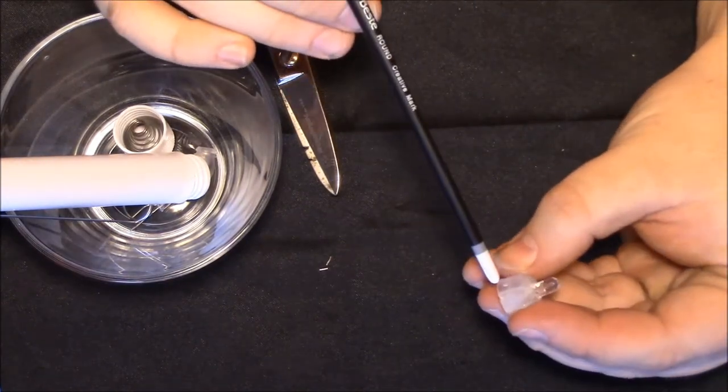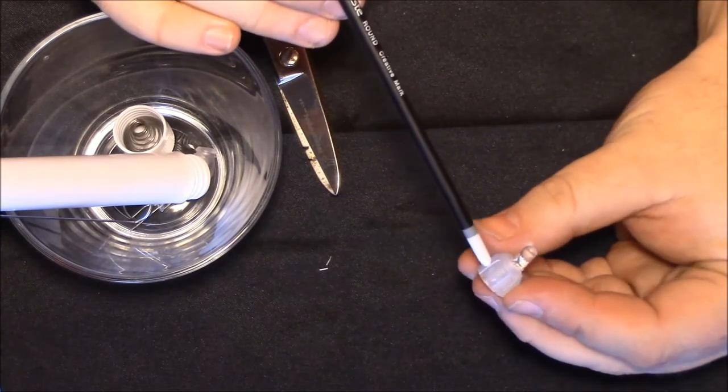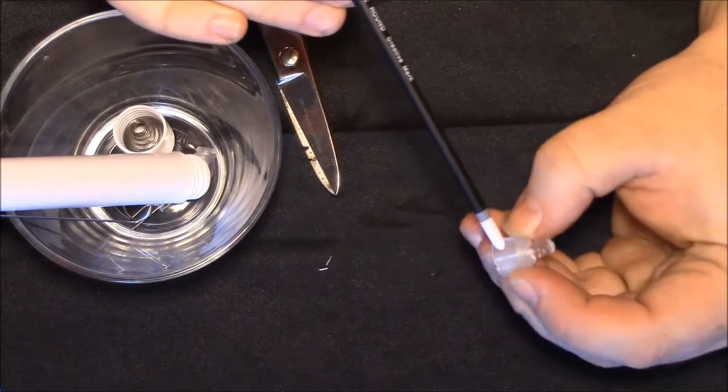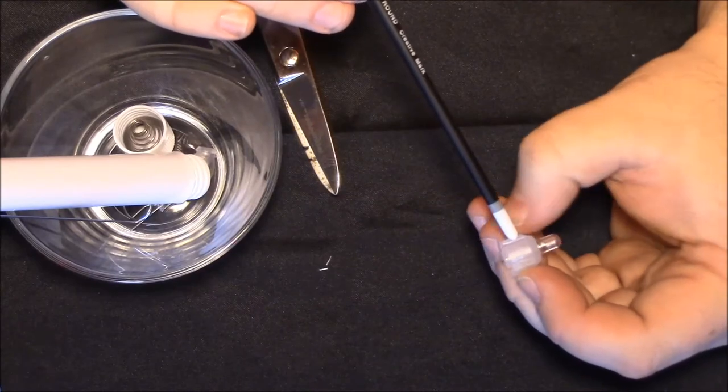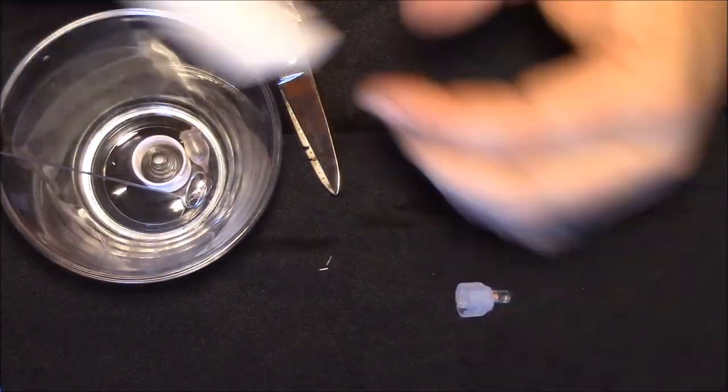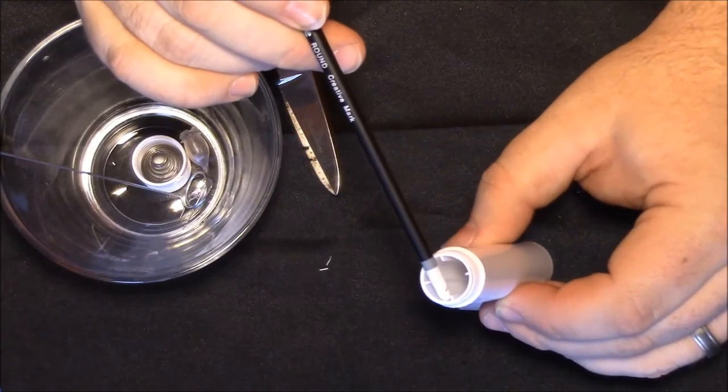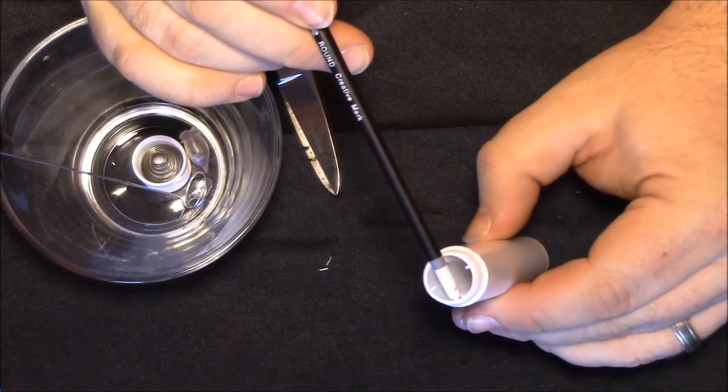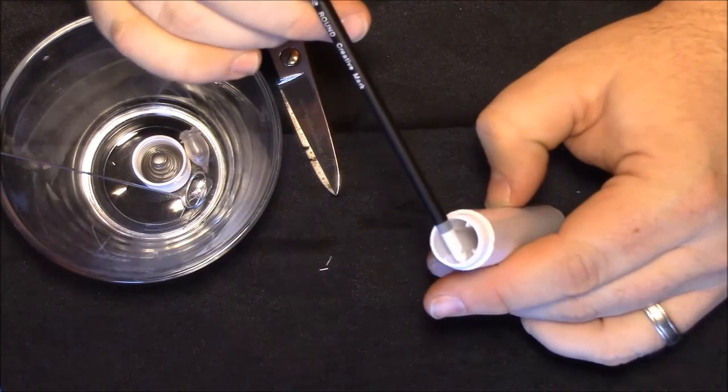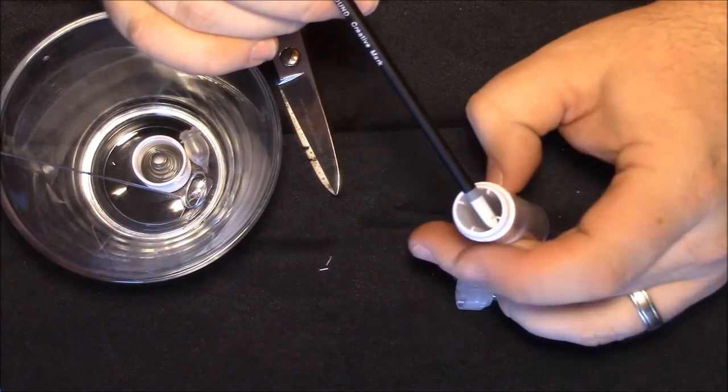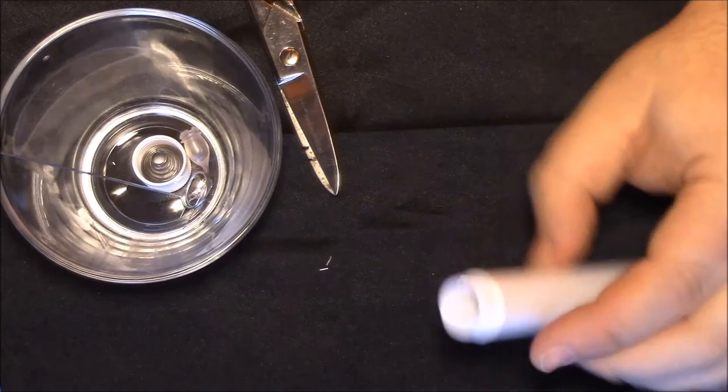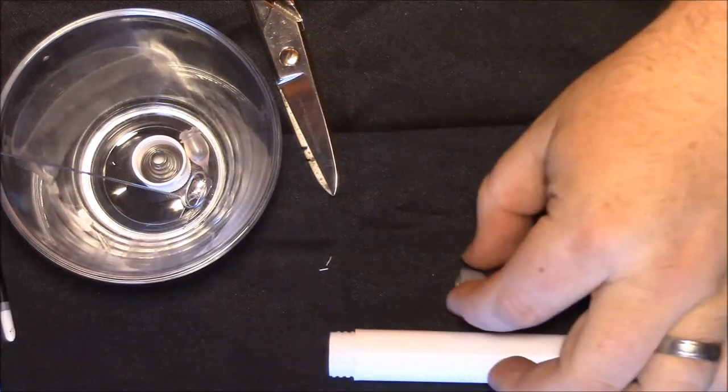Remembering which side is positive and negative, you're going to trim just a little bit more of the negative side of the LED off. The reason you're going to do that is you want the negative side of the LED to be hidden inside this housing.